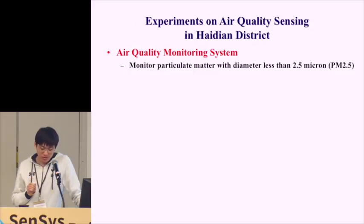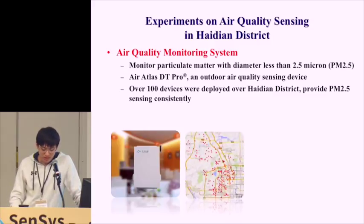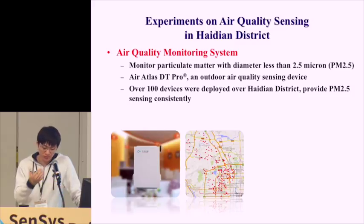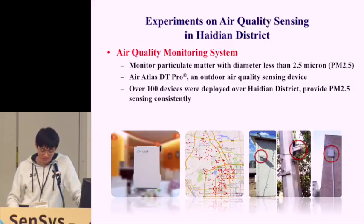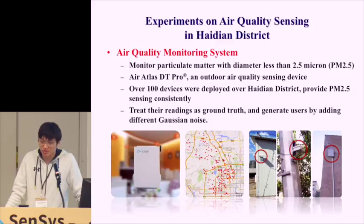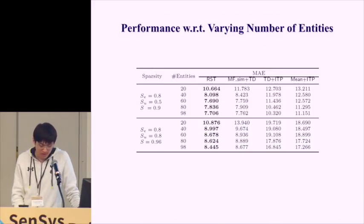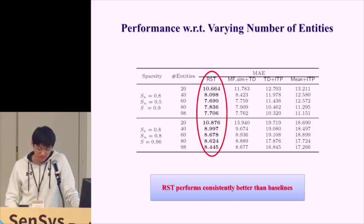The second experiment also involved air quality sensing, using an outdoor sensing device called Air Atlas. Over 100 such devices are deployed across the Haidian district in Beijing, providing consistent PM2.5 readings. Since we don't have real users in this experiment, we treat device readings as ground truth and generate users by adding different levels of noise. Varying the number of entities from 20 to 98, the proposed method performs consistently better compared to all baselines.